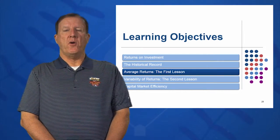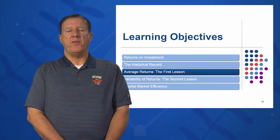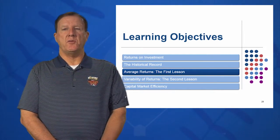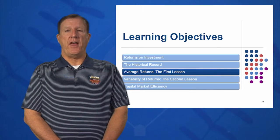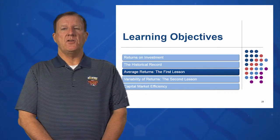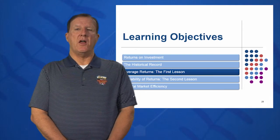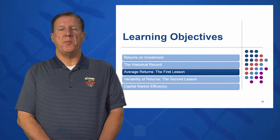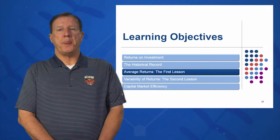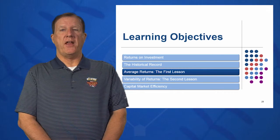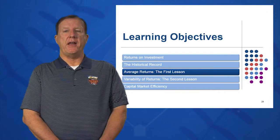In learning objective three, we're going to look at average returns. How have these financial instruments averaged over the last 85 to 90 years? Stocks — small company stocks, large company stocks, government bonds, corporate bonds, T-bills — and also what has inflation done over the last 85 to 90 years?